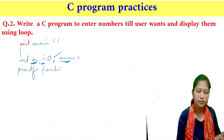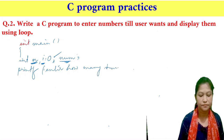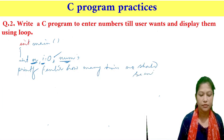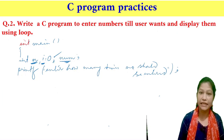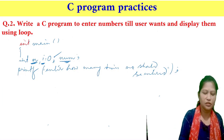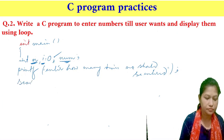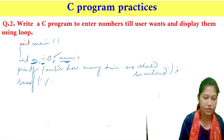We print: 'enter how many times the number should be entered', asking the user to enter the value of n. Then we use scanf to read n. Then we start the while loop.